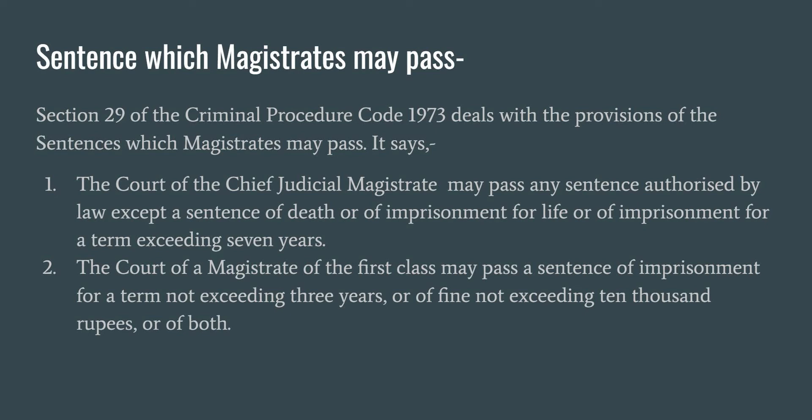Section 29 says: first point, the court of the Chief Judicial Magistrate may pass any sentence authorized by law except a sentence of death. The Chief Judicial Magistrate cannot pass a sentence of death or of imprisonment for life.